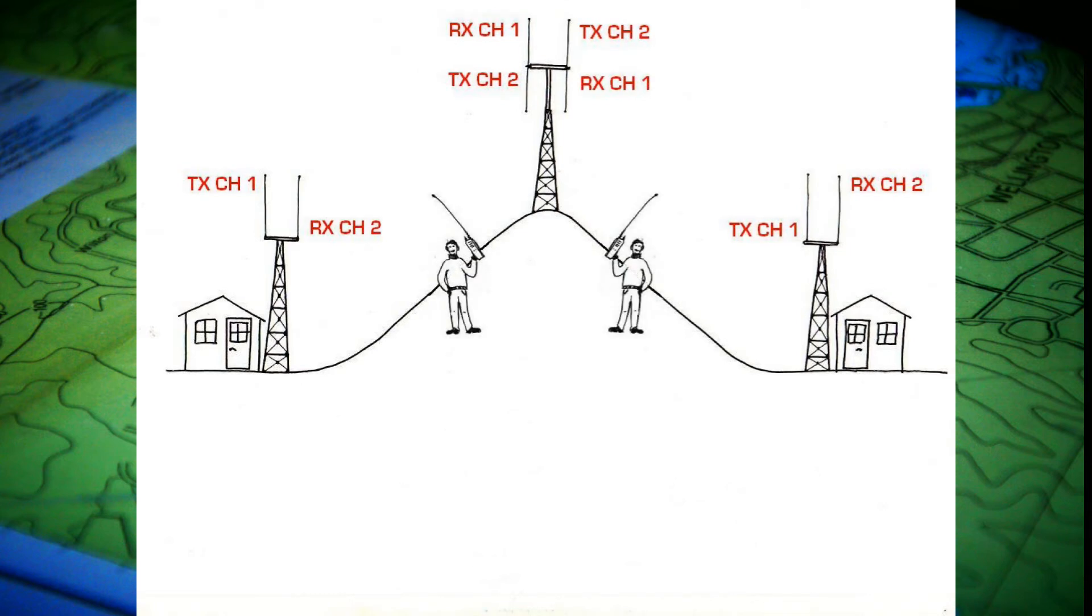Now, when they want to transmit, they do just the same. They transmit on channel 1. The repeater receives their signal and retransmits it to channel 2.